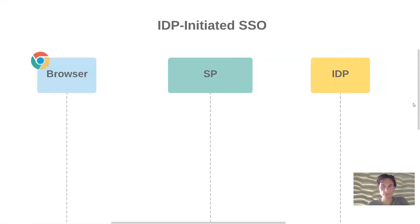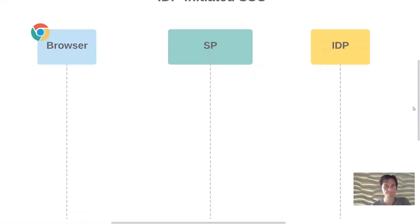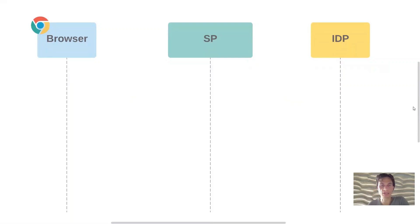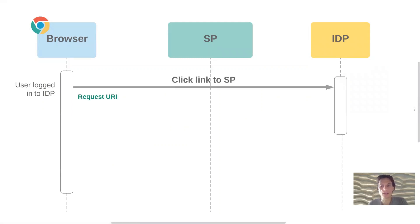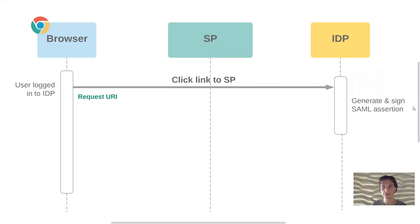Running through the flow for identity provider initiated single sign-on: the same three system actors that we had in the service provider initiated flow — the browser, service provider, and identity provider. We start this flow assuming that the user is already logged in to the identity provider. The user will typically click a link or an icon in the identity provider, and the identity provider will construct a SAML assertion for that user and will sign that assertion to be sent over to the service provider.